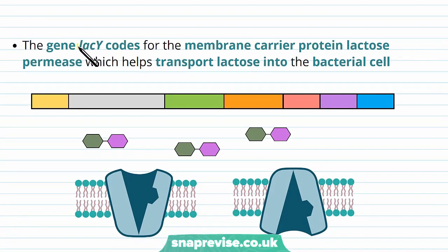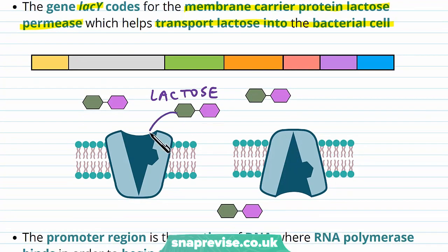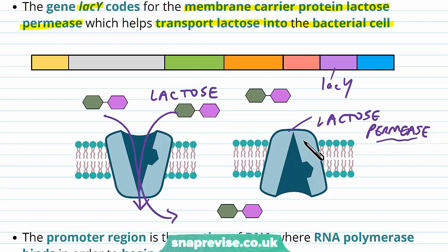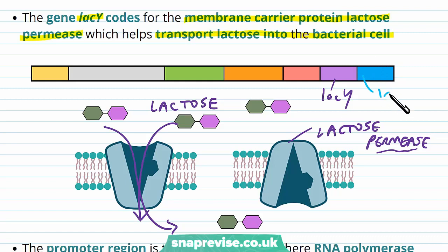After the lac Z gene we have the lac Y gene, which codes for the membrane carrier protein lactose permease. This helps to transport lactose into the bacterial cell. The lactose is floating around in the environment and in order to respire it, the cell needs to get it in — and it does this through the carrier protein lactose permease, encoded by lac Y. You can remember this because permease refers to permeability. The lac A region we don't fully understand yet, but we know it's important for lactose metabolism.